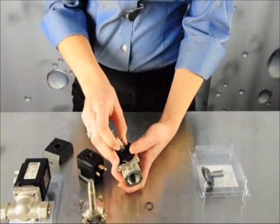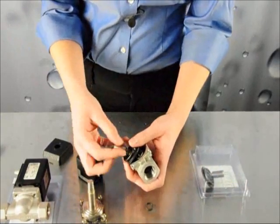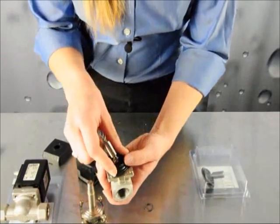Place the main diaphragm on the valve body, but make sure that the bleed hole is facing the outlet port.